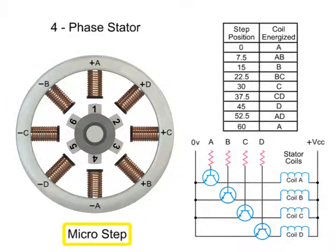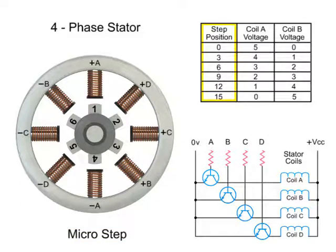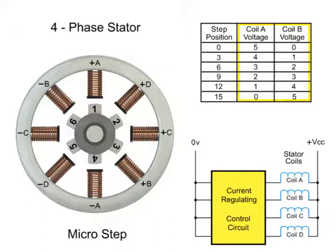Micro-stepping controls the current in the motor winding to a degree that further subdivides the number of positions between poles. To achieve micro-steps, the coils are only partially energized. As we apply a maximum voltage of 5VDC to coil A and a minimum voltage of 0VDC to coil B, rotor position 1 will line up.